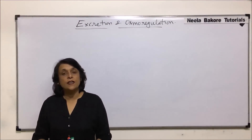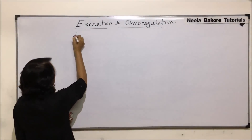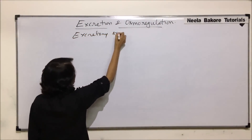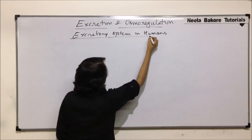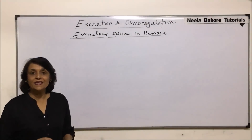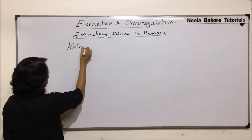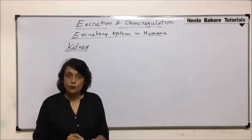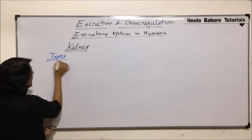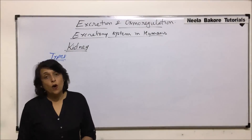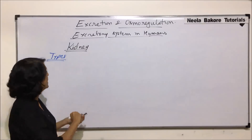We are starting with the excretory organs and the excretory system in humans. The main structure helping in removal of waste or excretion is the kidneys. Before taking the detailed structure of the kidney in human beings, we will talk about the types of kidneys — what structure they have and from which particular fluid the elimination of waste takes place.